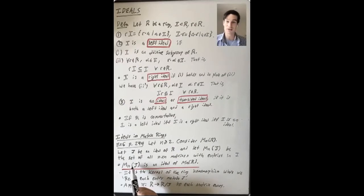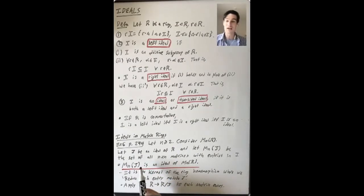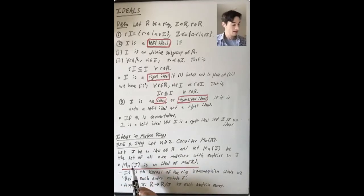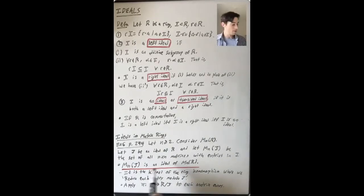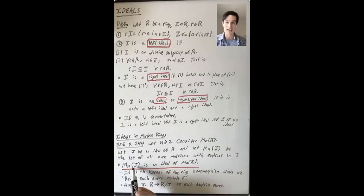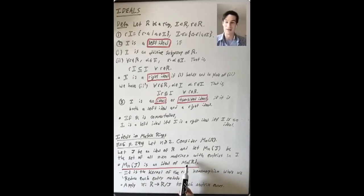You can prove this directly from the definition of an ideal. MnJ is an additive subgroup: matrix addition works componentwise, so closure under addition follows from J being an additive subgroup of R. For closure under left multiplication, look at the entries of a product of two matrices — going across a row and down a column, every matrix entry is a sum of things of the form (something in R) times (something in J), and since J is an ideal that lands back in J. The same argument gives closure under right multiplication, confirming MnJ is a two-sided ideal of MnR.